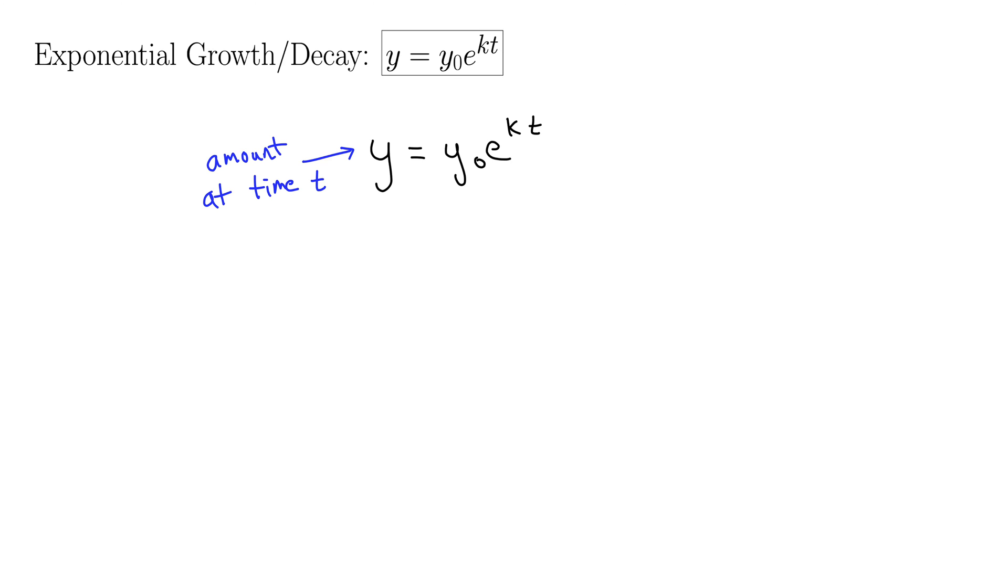y naught, or y sub zero, is the initial amount. Instead of saying y zero all the time, we say y naught. That's n-a-u-g-h-t. And it always means the initial amount of something. So v naught could be the initial speed, a naught could be the initial acceleration. y naught is the initial amount of something.